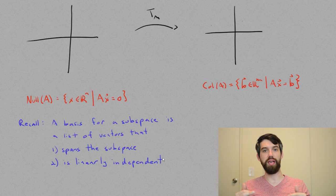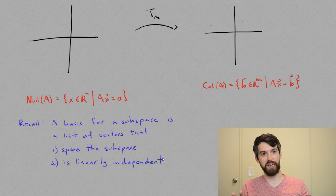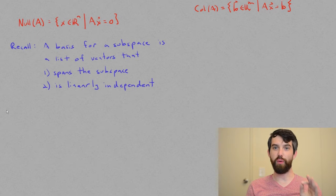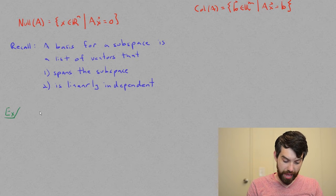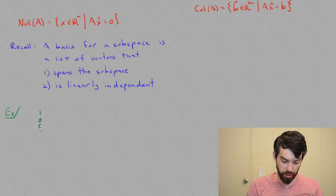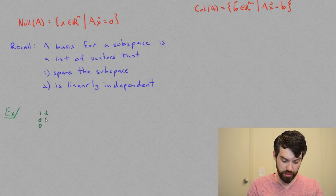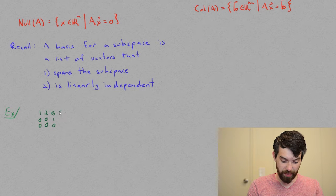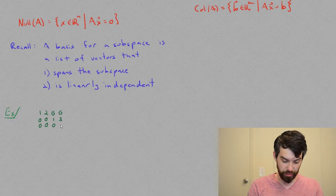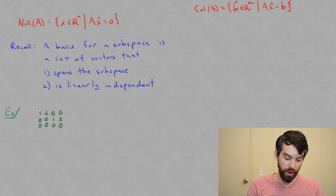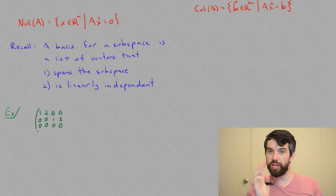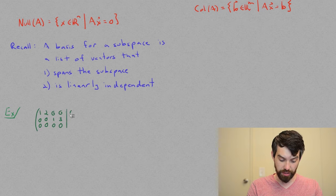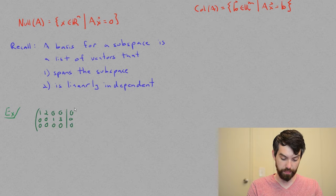Our goal now is to find bases for the null space and the column space. Let's take, as an example, the following linear system. I'm going to have 1, 0, 0, 2, 0, 0, 0, 1, 0, and just to spice it up, 0, 3, 0. Then I'm going to be considering the homogeneous linear system where I have the constant matrix of 0, 0, 0 appended.